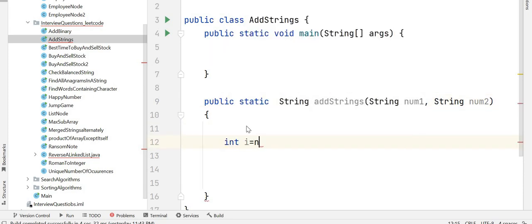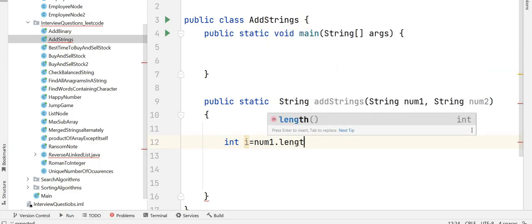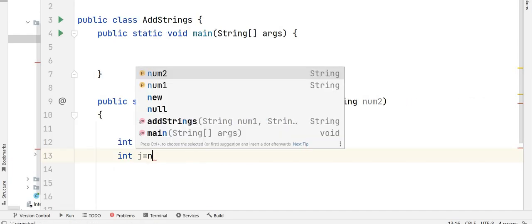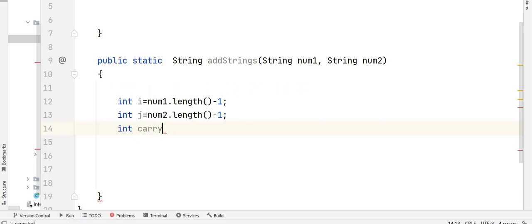Let's take two pointers one for the length of num1. And another pointer j which would be num2.length minus 1. And initially your carry would be 0. So initialize carry to 0.